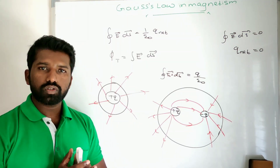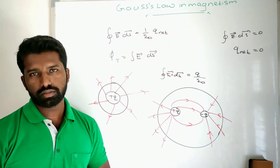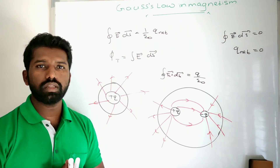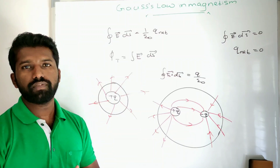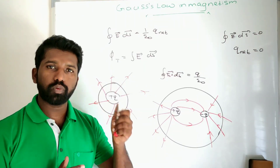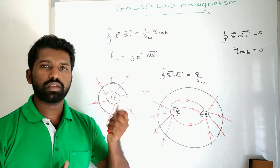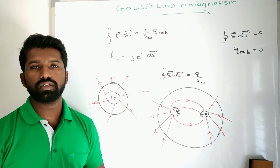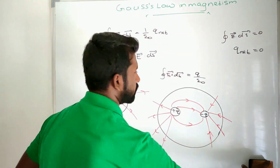This is Gauss's law in electrostatics, and we can apply it in magnetism. For applying it in magnetism, we will change the electric field and electric field lines to magnetic field and magnetic field lines. And the electric charges — positive and negative — we will change to magnetic north and south poles. And instead of electric flux, we will consider magnetic flux.